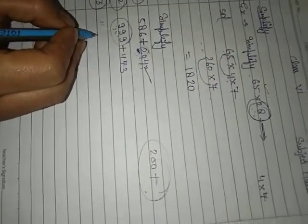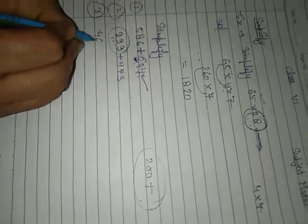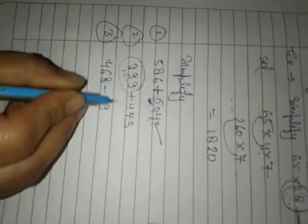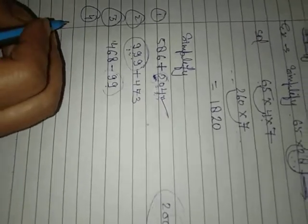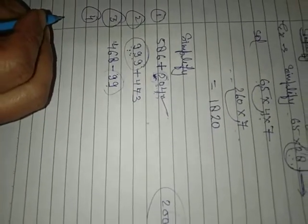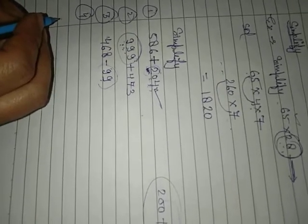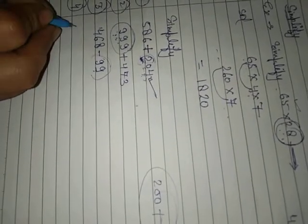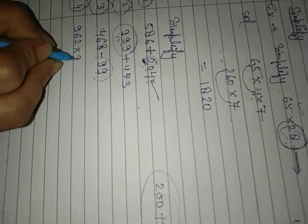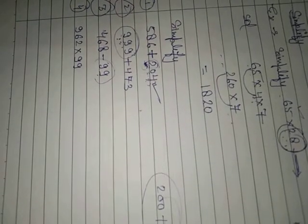Now do this one: 468 minus 99. Since 99 is nearest to 100, use 100 minus 1. So 468 minus 100 minus 1. Now you can solve it easily. This is your classwork.